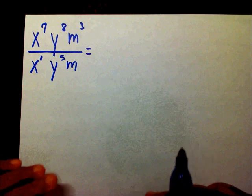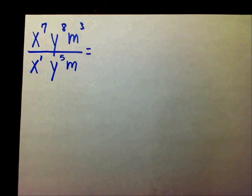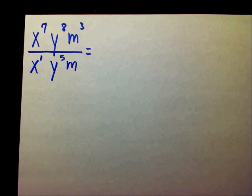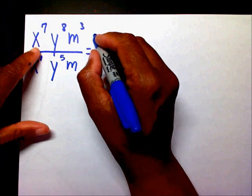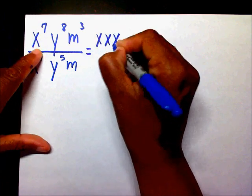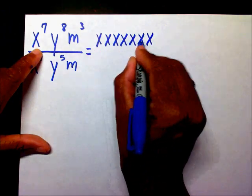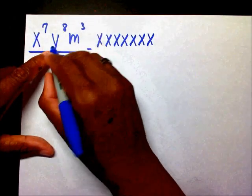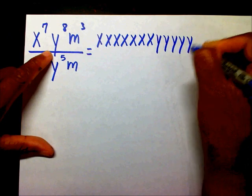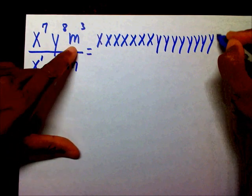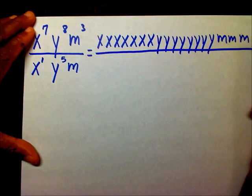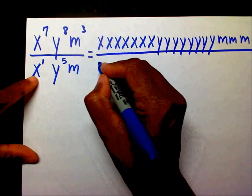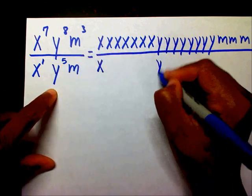We have x to the 7th, y to the 8th, m to the 3rd over x to the 1st, y to the 5th, and m. Let's expand: I have seven x's, eight y's, and three m's in the numerator. In the denominator I have one x, five y's, and one m.